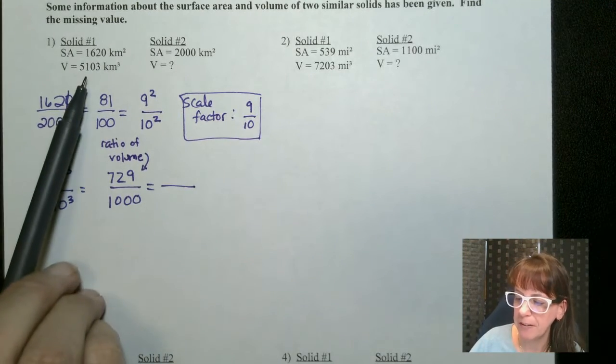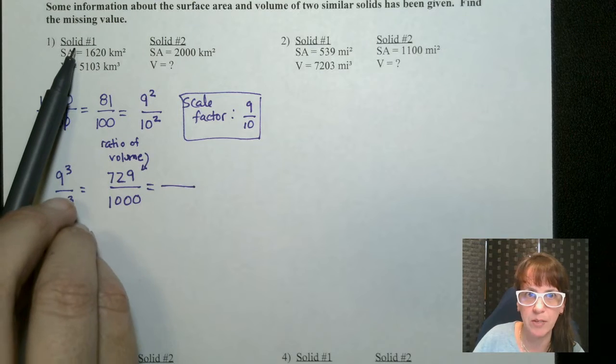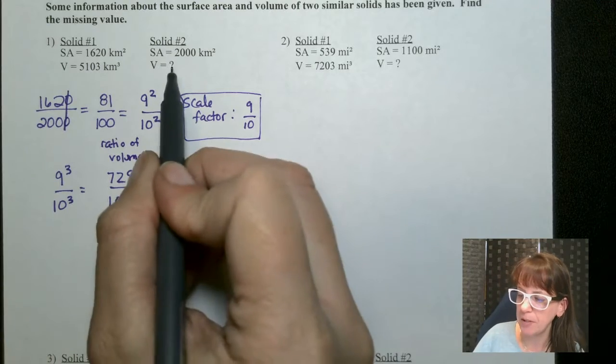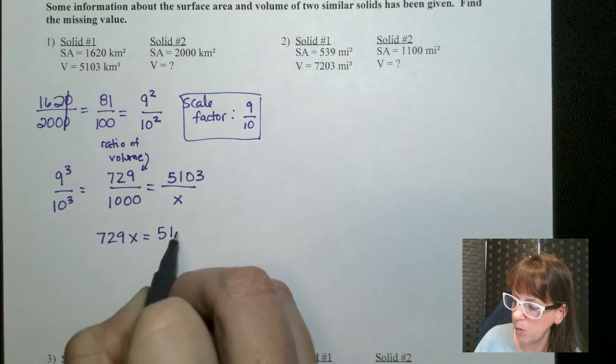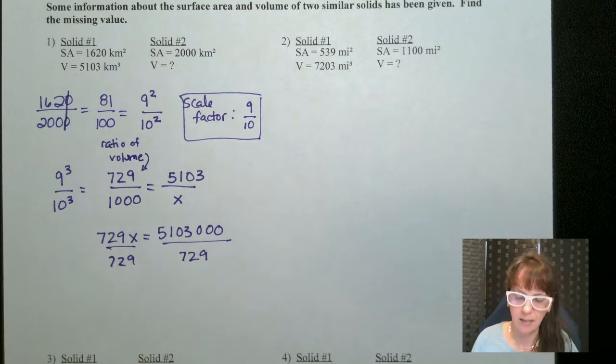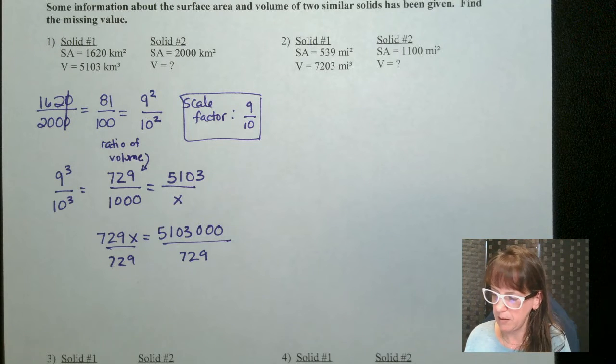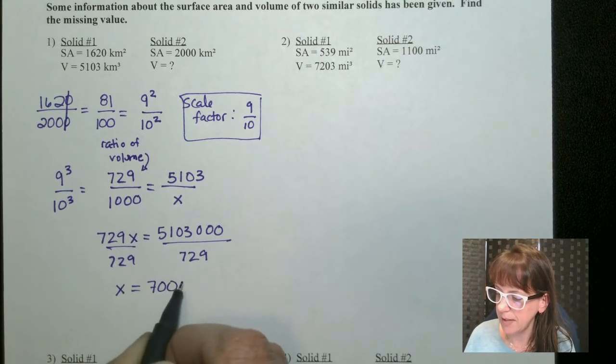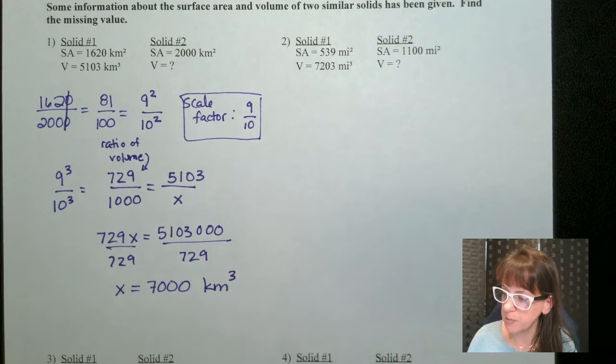So the volume of my first one is 5103 and that's the 9 right because I went 1 to 2, 1 to 2. You got to keep it in order is what I'm getting at. So 5103. Now the volume of the second one is what I don't know. So now we can cross multiply. 729x equals 5103 with three zeros. Divide by 729. And if we do that we get x equals 7000 and we're talking about kilometers cubed.